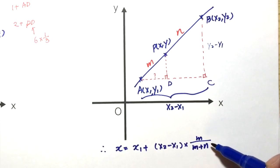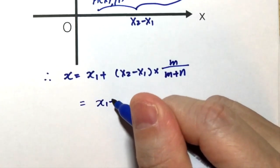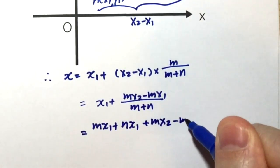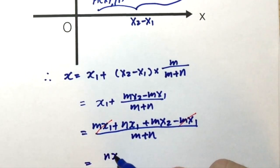Although this is a ratio, we can express this in the form of a fraction, and therefore we can simplify this. At this point we can cancel out this term mx1, and therefore the final formula will be like this.